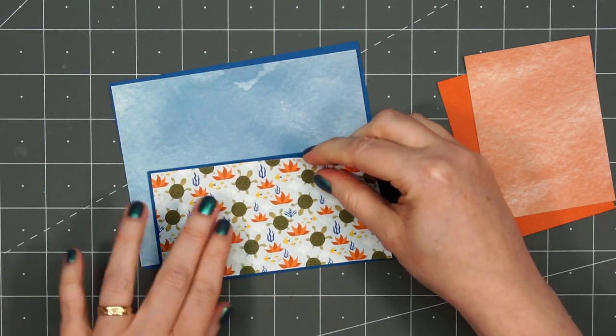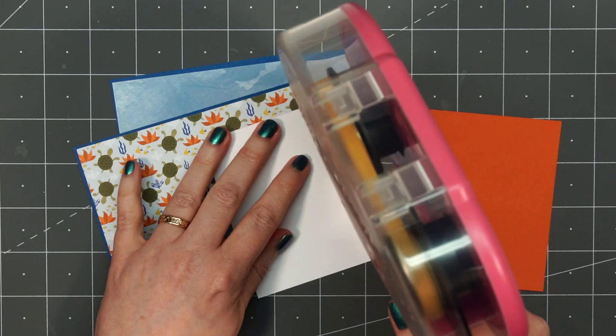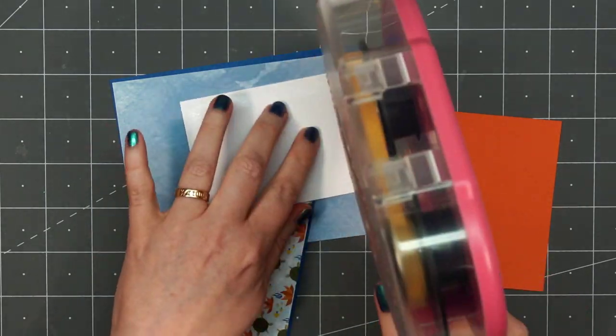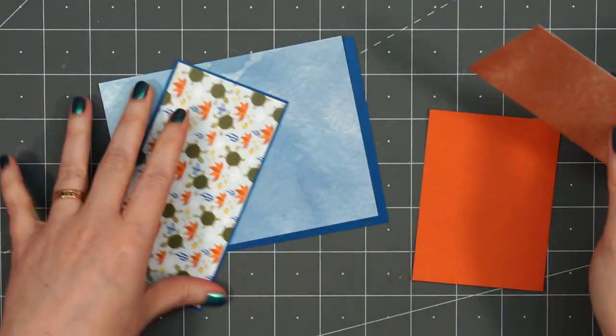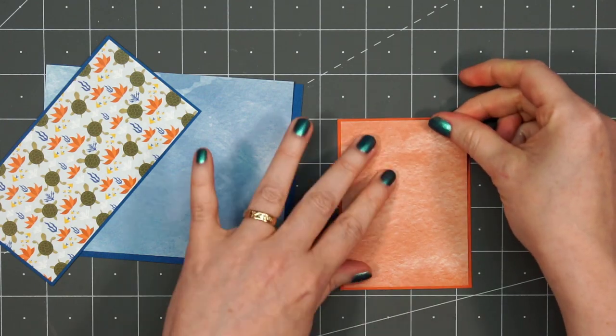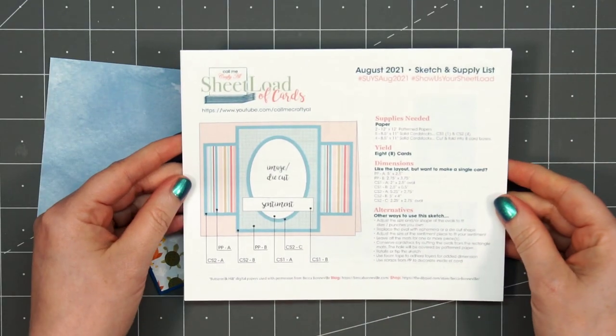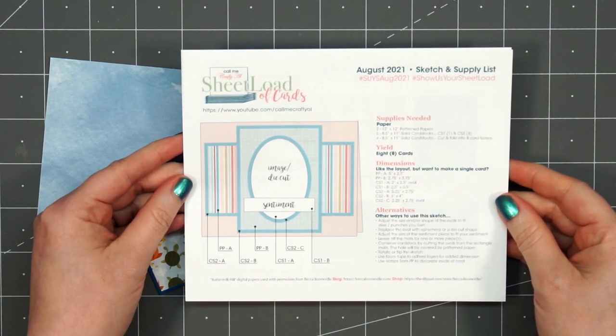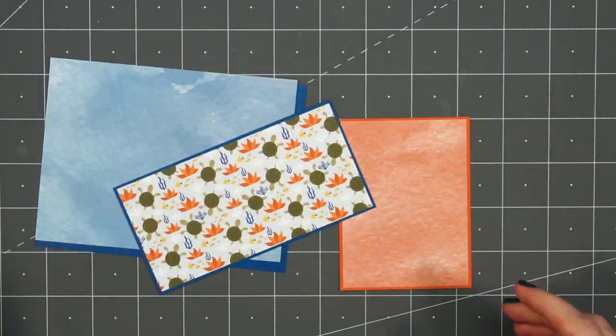For my first card, I'm using a card sketch from Call Me Crafty Al. It's the August 2021 sheetload of cards. I will share all of the sketch information over on my coordinating blog post. That link is provided in the description box below.